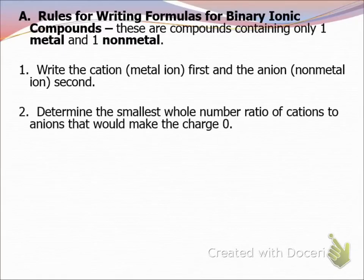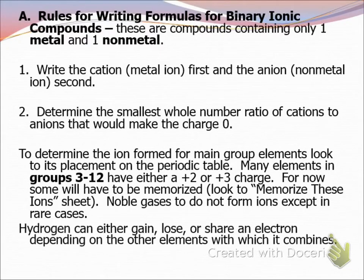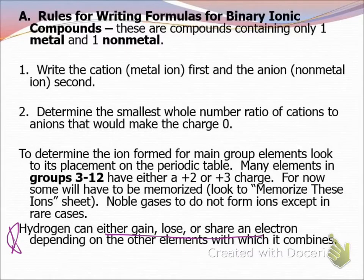You're going to determine the smallest whole number ratio of cations to anions that would make the charge equal zero, because they're electrostatically attracted but neutral when together. For main group elements, determine the ion from its placement. Many transition elements in groups 3 through 12 can have multiple charges — you'll need to memorize these. A roman numeral will tell you which charge you have. Hydrogen is unique: if it gains an electron it's −1, if it loses it's +1.